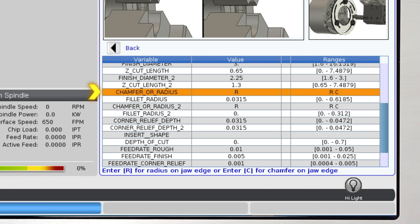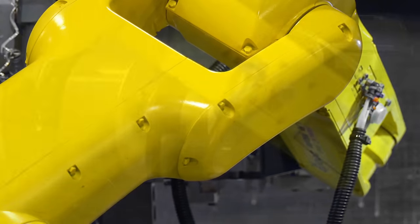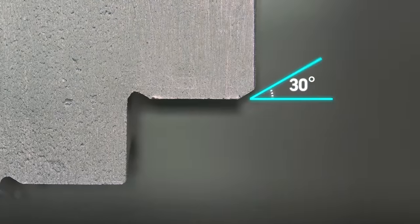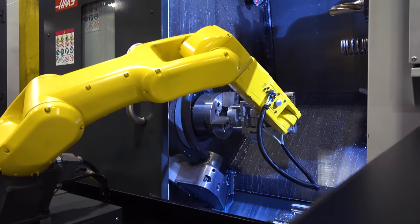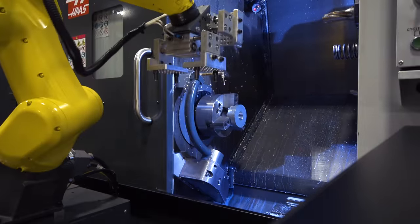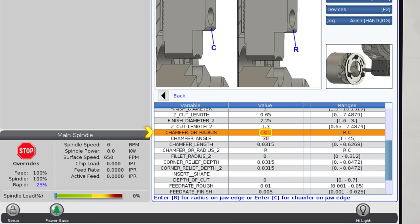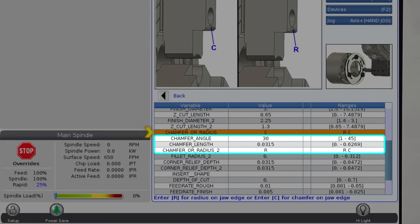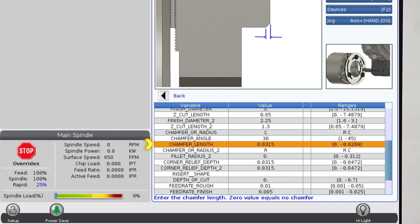First is the option for a chamfer or radius on the edge of your jaws. If this was an automated load, it would be more helpful to have a slight angle on the edge of your jaws to help load raw or irregular stock. A lead angle will guide offset blanks into the jaws and prevent misload alarms. So I'll change this default R for radius to C for chamfer. This prompts a couple of chamfer values that are required. I'll leave the lead angle at the default 30 degrees. That's a good lead angle to load parts. The next is the chamfer length. I'm going to change this to a larger 100 thou or 2.54 millimeter length.